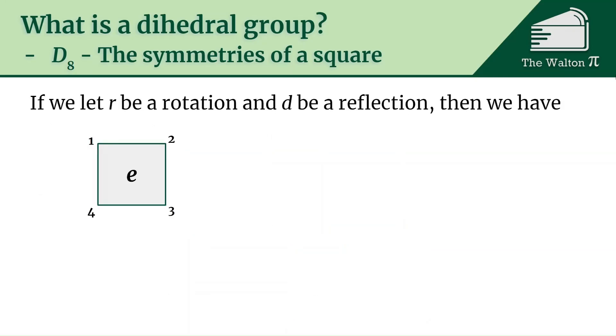If we let r be a rotation and d be a reflection, then we have this e—that's going to just be our natural starting point, that's the identity, it's not changing. We could rotate it once, or we could rotate it twice, or rotate it three times. But if we rotate it four times, we're back to where we started, because if we rotate two, three, four, one, that becomes one, two, three, four, which is our original starting point.